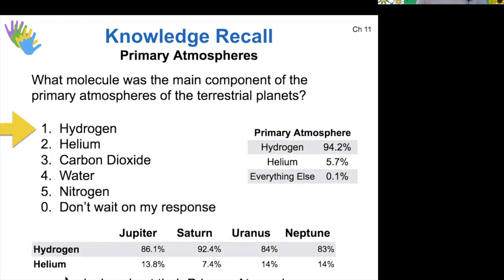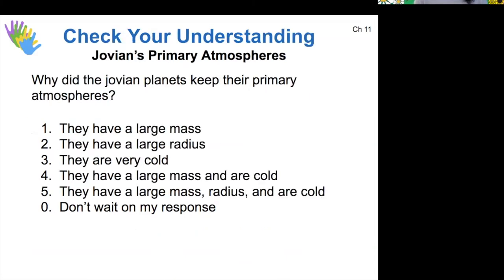When we look at the composition of the atmospheres for the Jovians, they are fairly similar to these primary atmospheres. So essentially, Jovians kept their primary atmospheres. On terrestrial planets, those primary atmospheres escaped over time, but not so on the gas giants. So why would this be the case? Why did they keep their primary atmospheres?